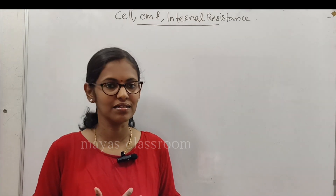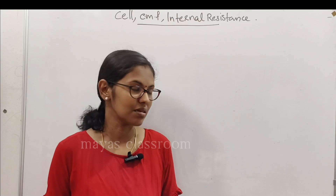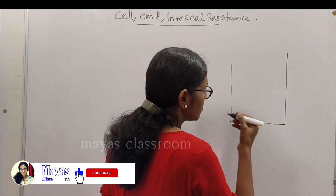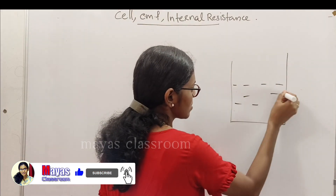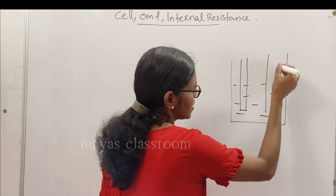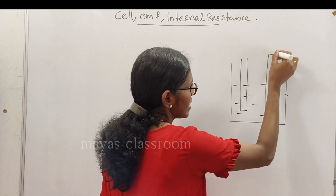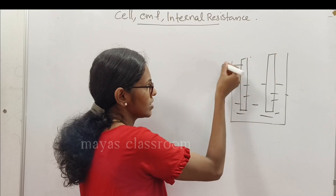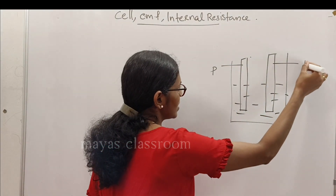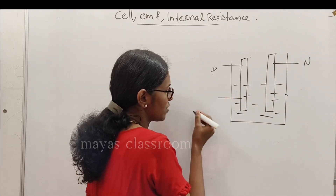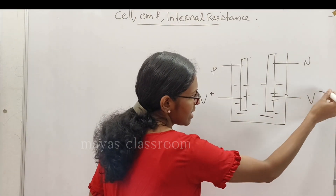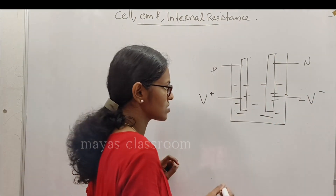If you have a simple device, it will be a cell. The cell will have an electrolyte. If you have a positive electrode, you can see V plus. If you have a negative electrode, you will see V minus.